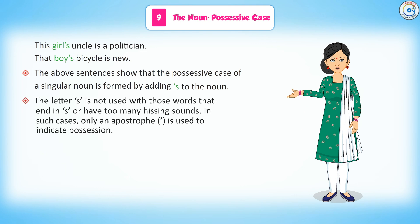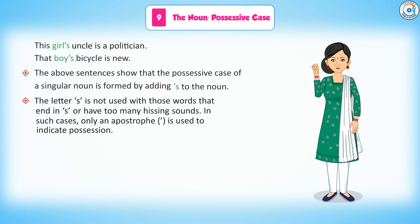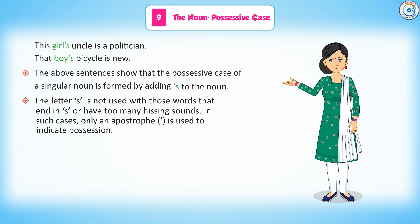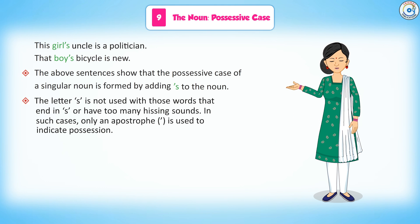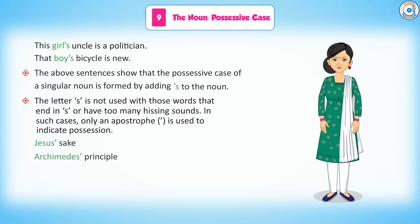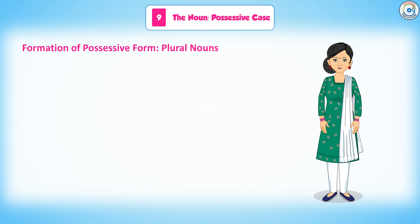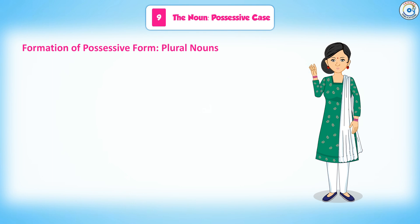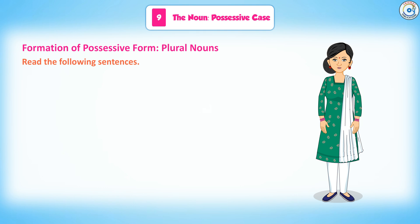The letter 's is not used with those words that end in S or have too many hissing sounds. In such cases, only an apostrophe is used to indicate possession — for example, Jesus' sake and Archimedes' principle.